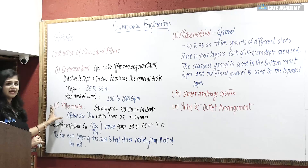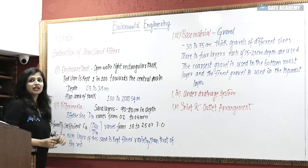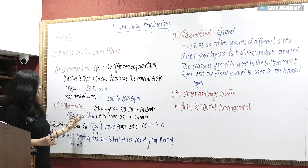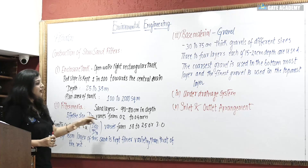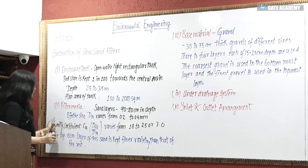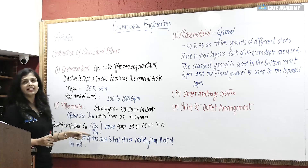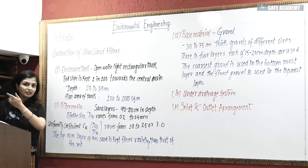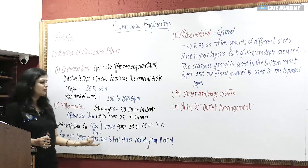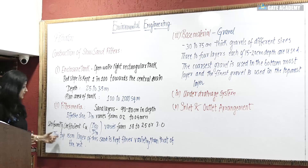For the filter media: the sand layer depth is 90 to 110 cm. The effective size D10 varies from 0.2 to 0.4 mm. You have to know this because the value of effective size and the uniformity coefficient will vary when you talk about rapid sand gravity filters. Here the uniformity coefficient CU, which is D60 upon D10, varies from 1.8 to 2.5 or up to 3.0.